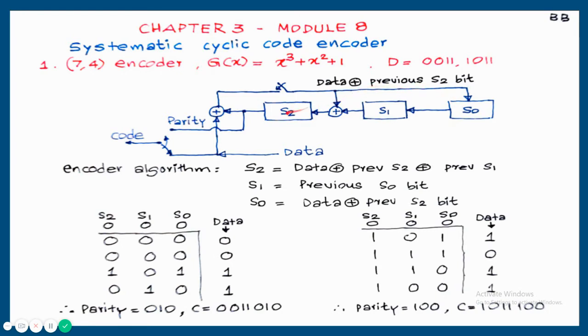All these connections are fixed for any n,k cyclic code encoder. The only difference is this number can change depending on the n minus k value. If n minus k equals 4, then it will be S0, S1, S2 and one more block. Each block is a shift register.